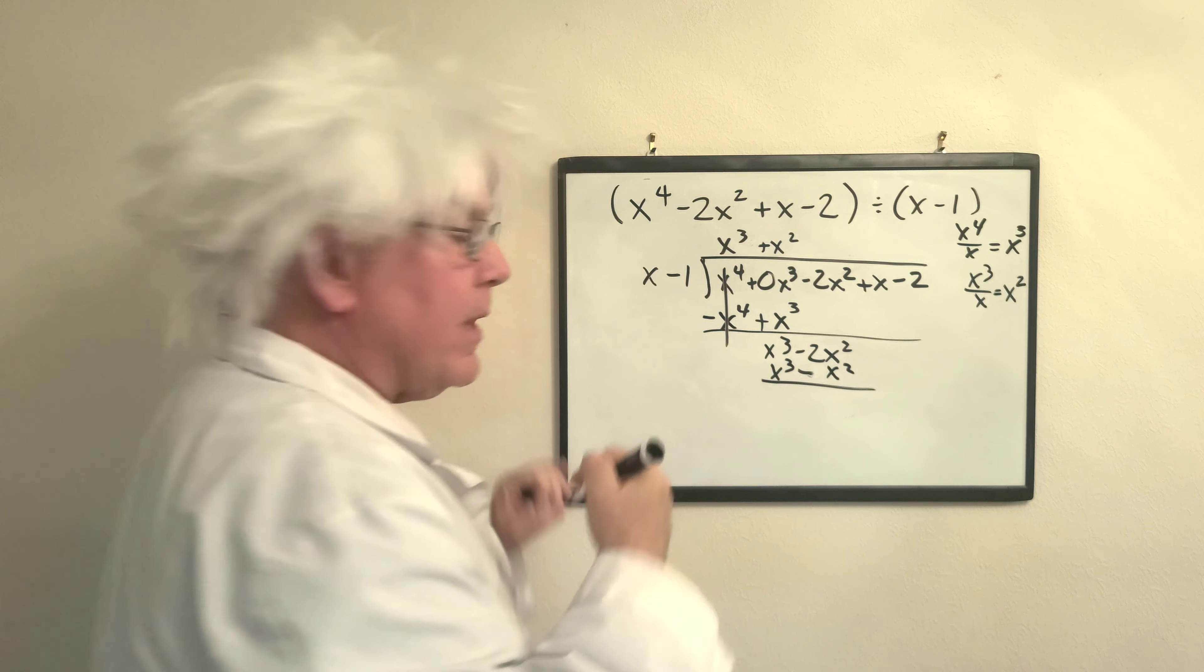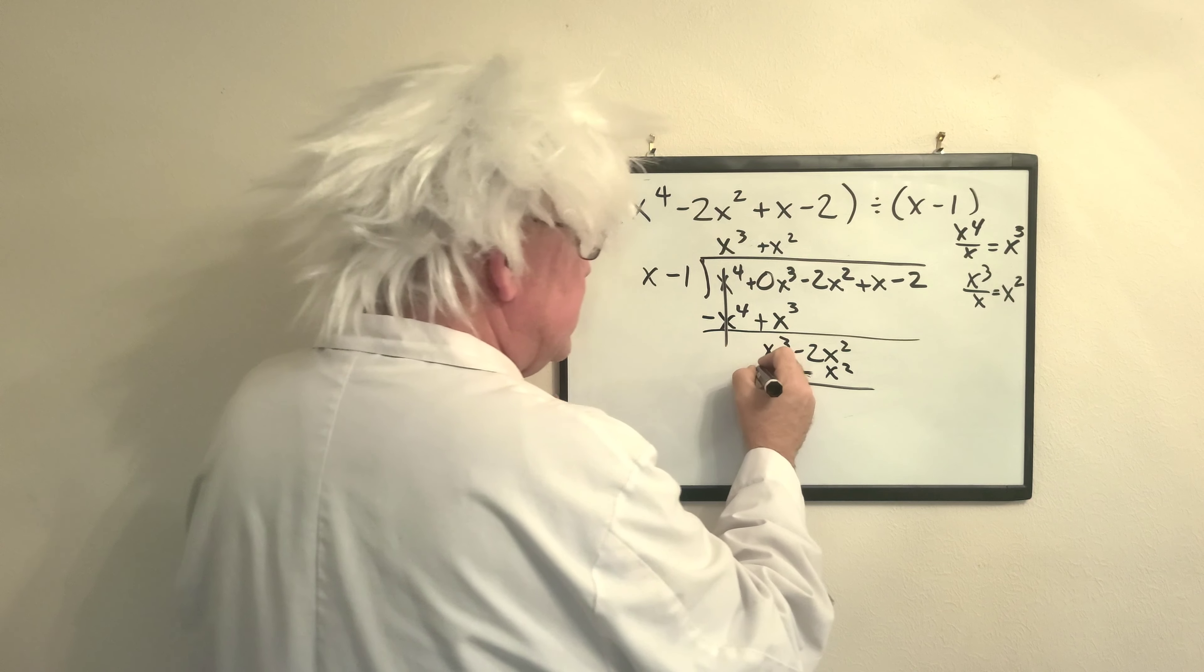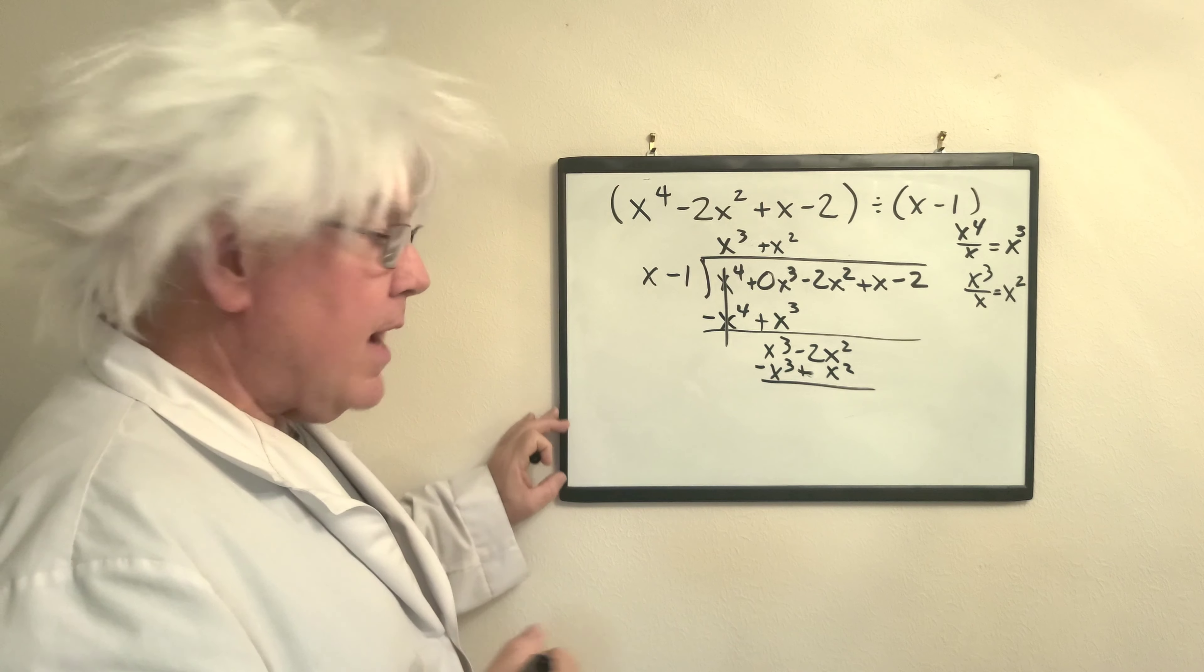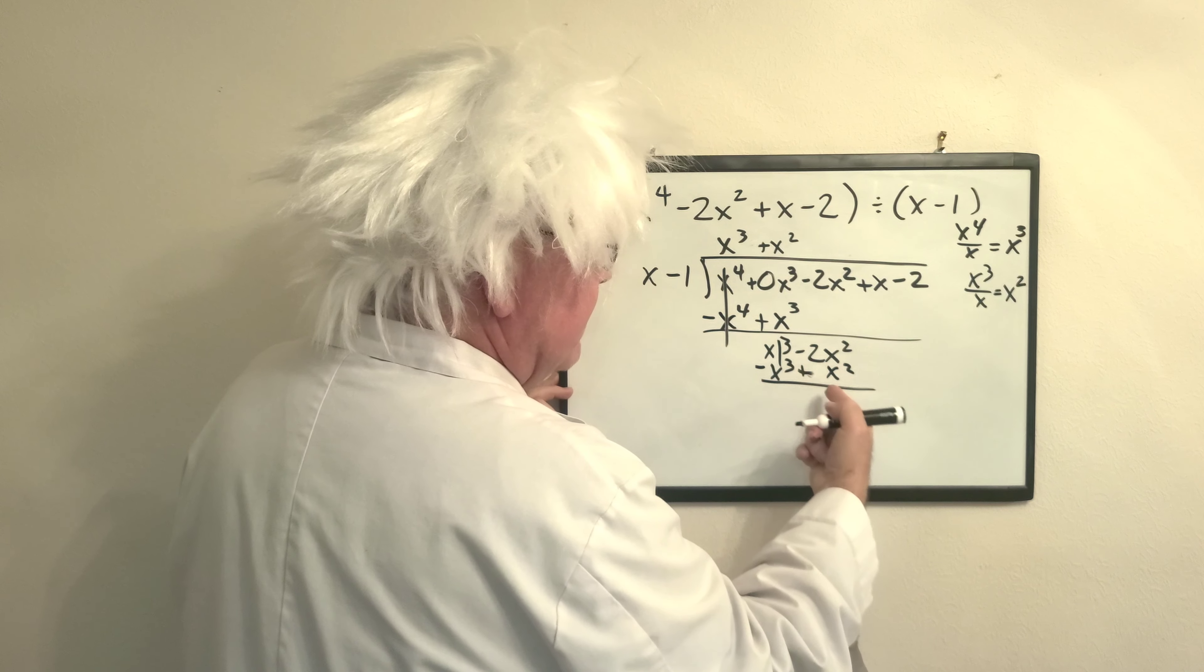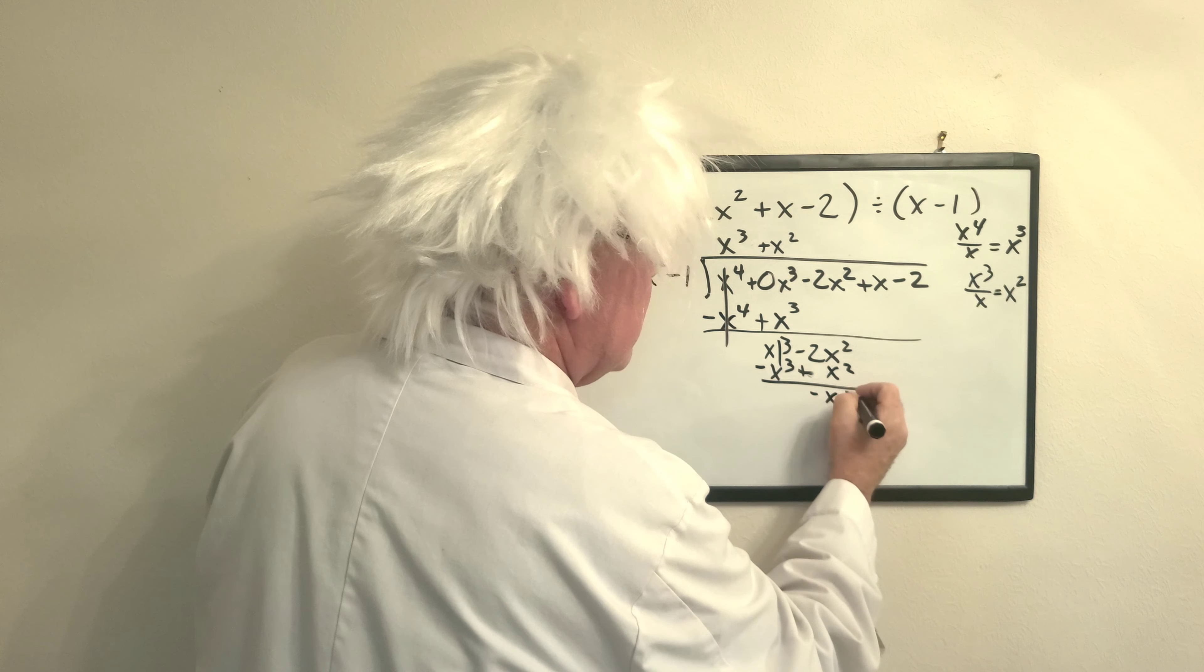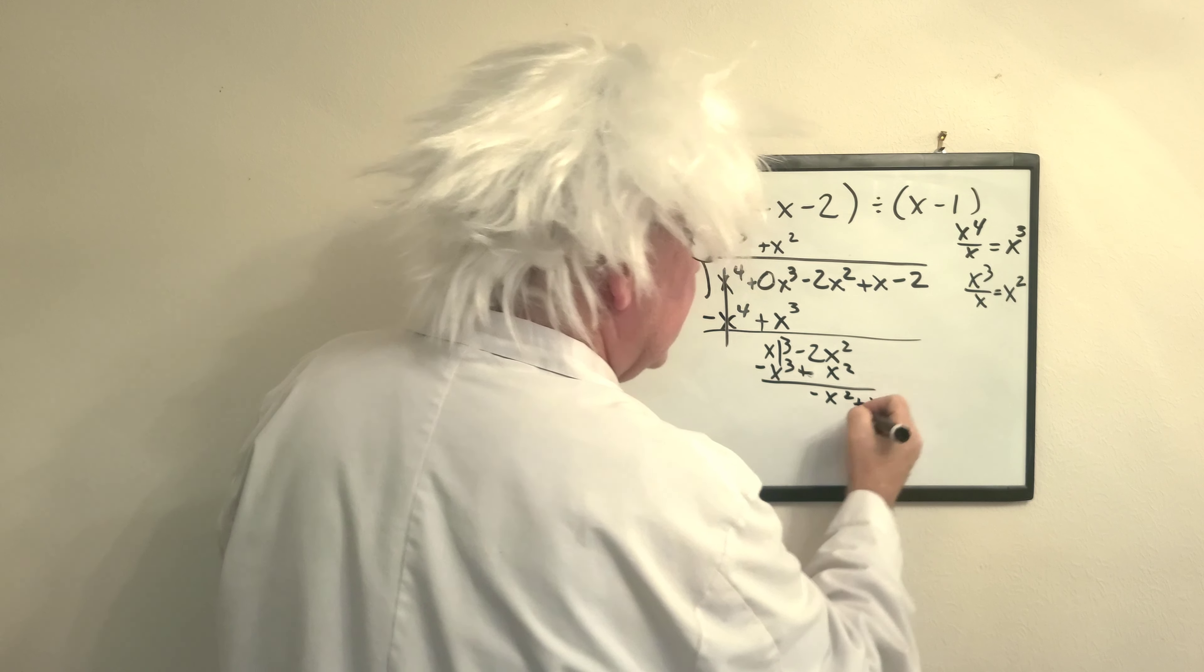Now, before we combine, we have to change the signs. All right? So these go away and negative 2 plus 1 is negative x squared. I bring down my plus x. I start it again.